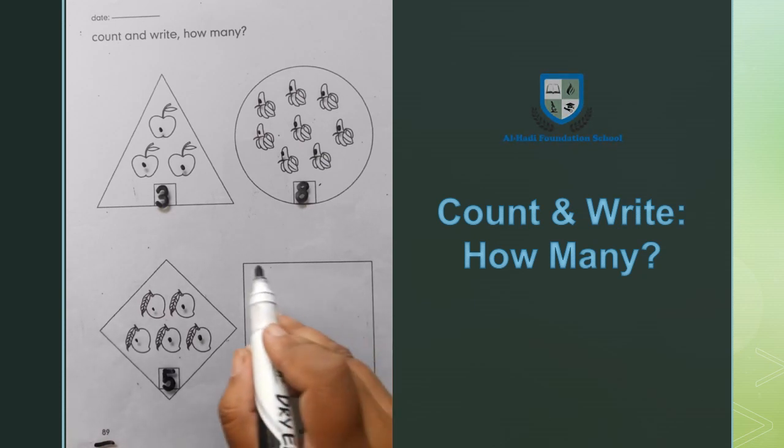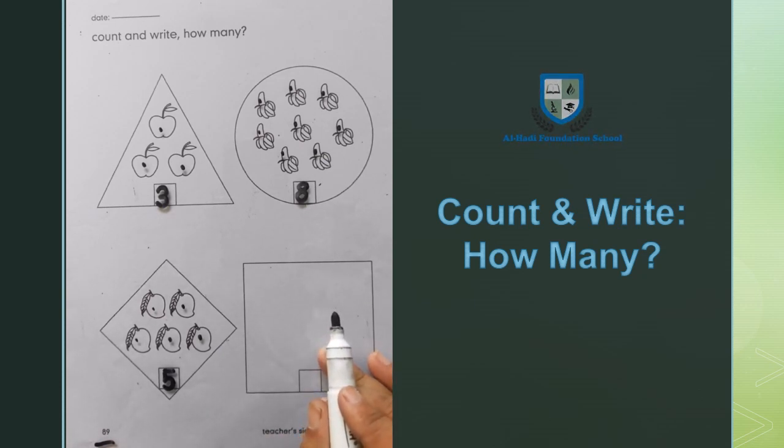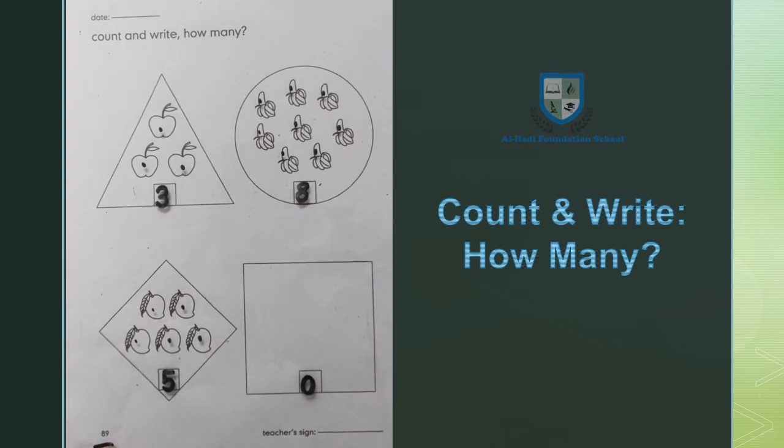The last shape is the square. There is no square here. We will write zero. Zero means nothing because zero value is nothing. We have zero because this shape has no other thing.